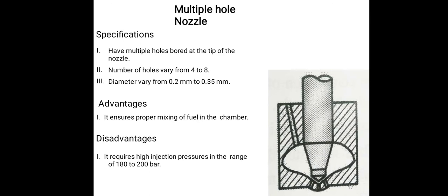Multi hole nozzle specification: have multiple holes bored at the tip of the nozzle. Number of holes varies from 4 to 8 holes. Diameter vary 0.2mm to 0.35mm. Advantages: it ensures proper mixing of fuel in the chamber. Disadvantages: it requires high injection pressure, high injection pressure range 180 to 200 bars.